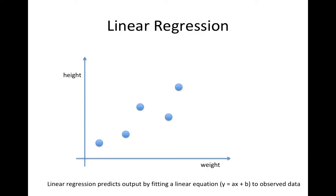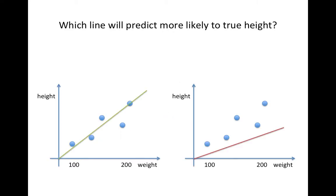Specifically, linear regression predicts output by fitting a linear equation to observed data. So here is a quiz: which linear line do you think is more likely to be the true height?